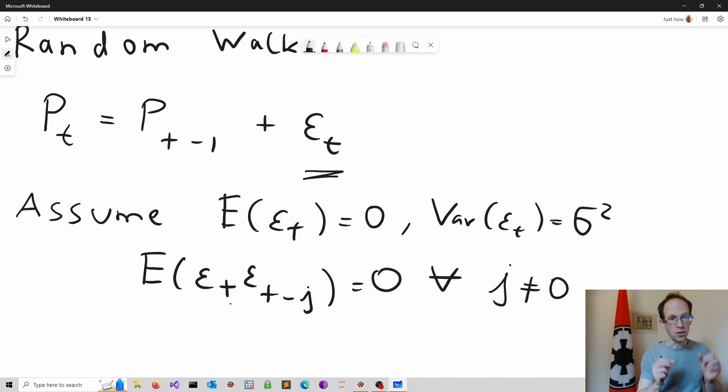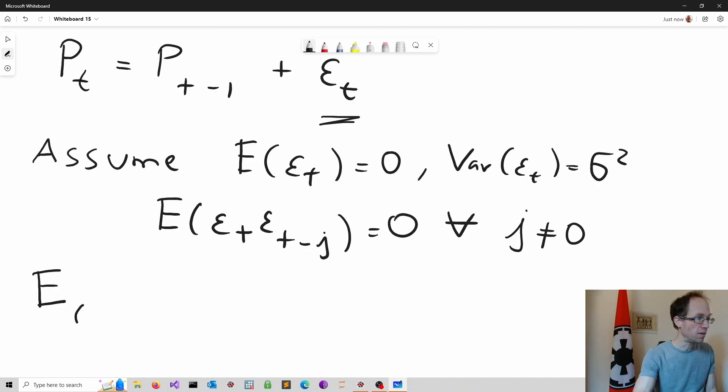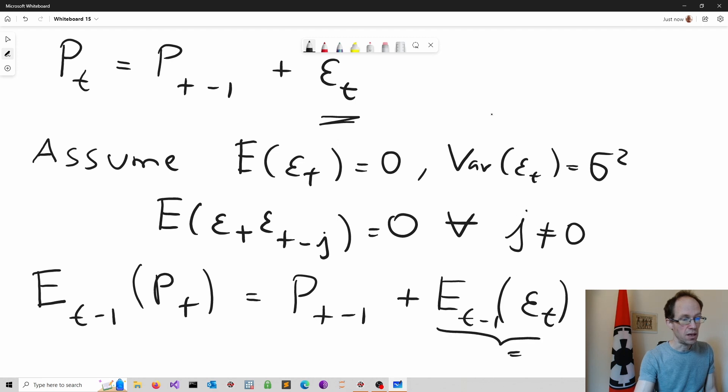Hence, taking conditional expected values based on information available at time t-1 yields the following. So the expected value, given the information at t-1 for Pt, is simply the previous share price, which is observed by definition, plus a conditional expected value for the error term. But we know that the expected value in this case is equal to 0. If you apply conditions, it doesn't change that. So this simplifies to the previous share price.